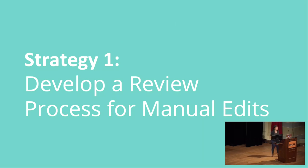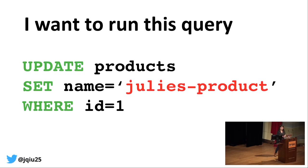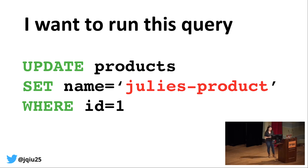The first strategy is relatively simple — it doesn't require any new code to be written or infrastructure to be built. Rather, it's simply developing a process for making sure that we get spot-checked when we make edits to production. So let's go back to that query I had wanted to run for the marketing team. I want to update the product with ID 1 to be named Julie's product. What I did a few slides ago was just go ahead and edit that field without any supervision, which was a pretty dangerous situation.